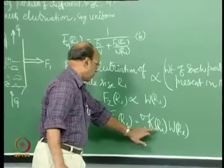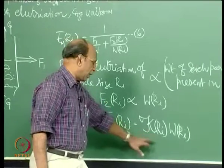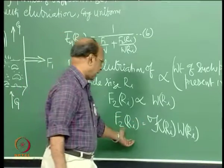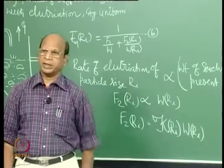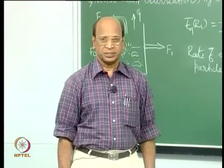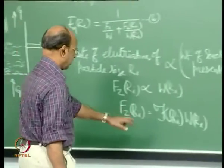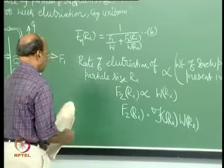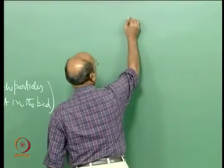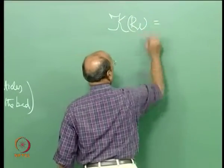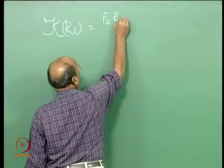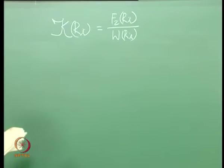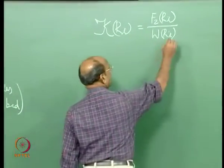So F2(r_i) is proportional to W(r_i), or F2(r_i) = k(r_i) · W(r_i), where k is the elutriation rate constant. k(r_i) is a proportionality constant — it is nothing but a first-order reaction analogy: the rate of reaction is directly proportional to the concentration of the particles in the bed. k changes for each particle size. This is equation 12: k(r_i) = F2(r_i) / W(r_i).